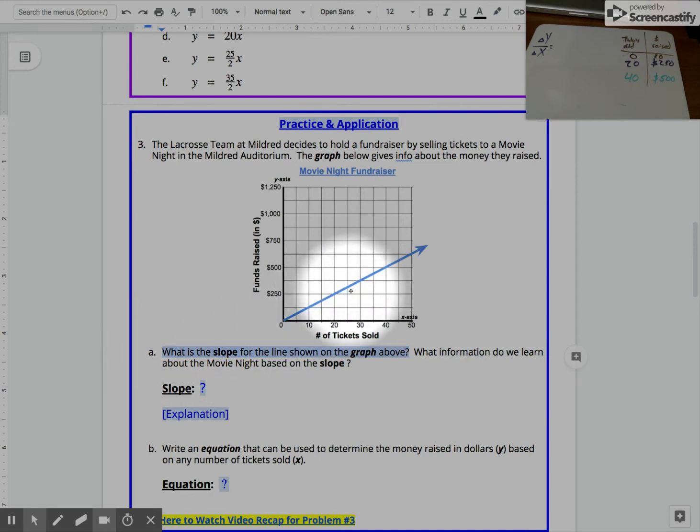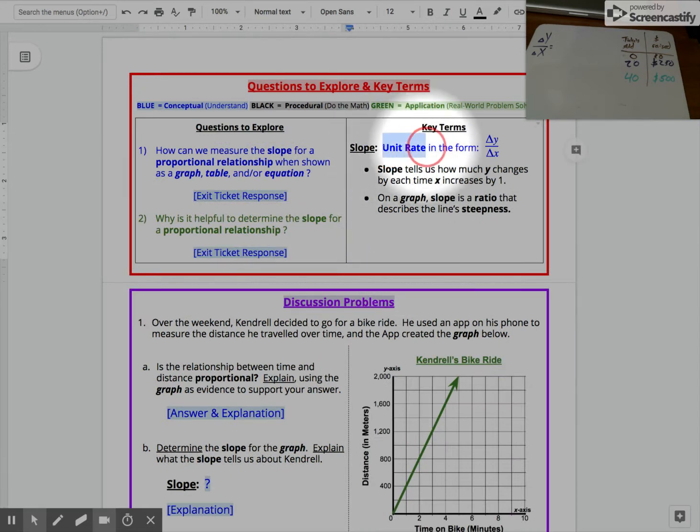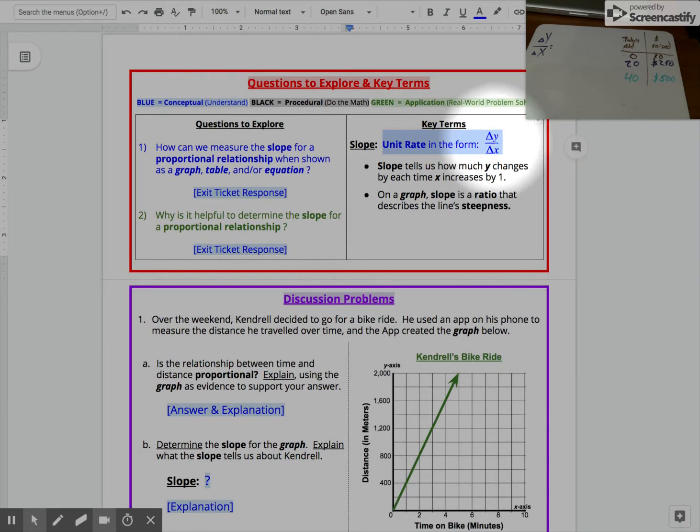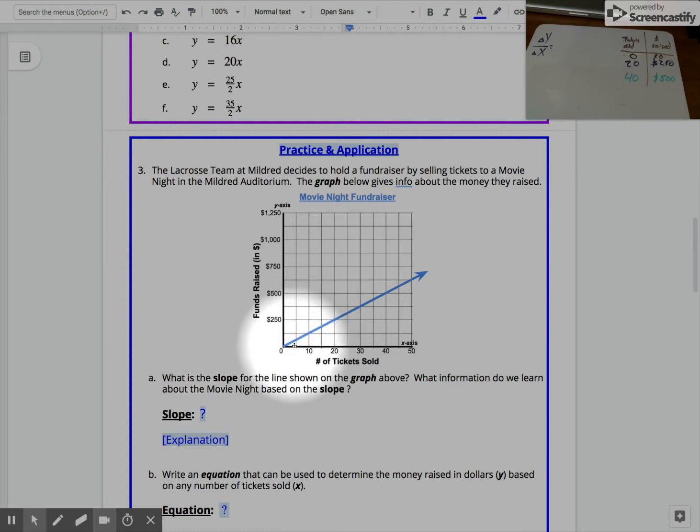So the first question we'll focus on is: what is the slope for the line shown on the graph above? If we remember from earlier, slope is really just another term for our unit rate, so long as we find that unit rate with y in the numerator and x in the denominator.